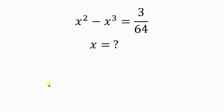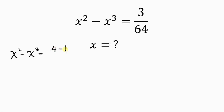Welcome back to the YouTube channel. We have a math question which says: find the values of x for which x squared minus x cubed is equal to 3 over 64. We have x squared minus x cubed equal to 3 over 64, which is the same as 4 minus 1 all over 64.